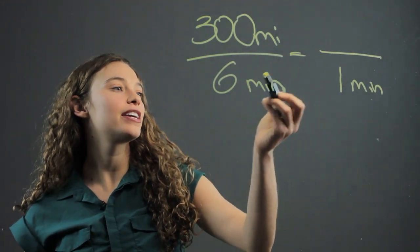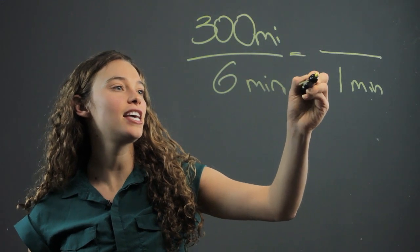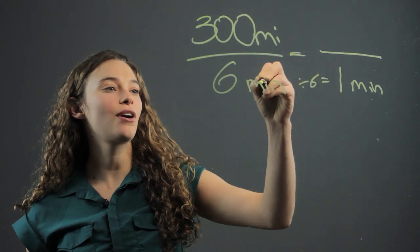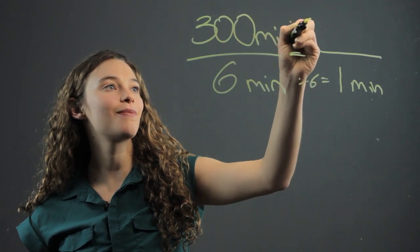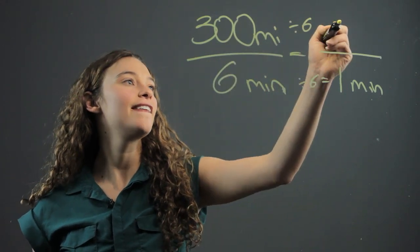So here, if you're going from 6 to 1, you can divide 6 by 6 to get 1. So you can divide the numerator as well by 6. 300 divided by 6 is 50.